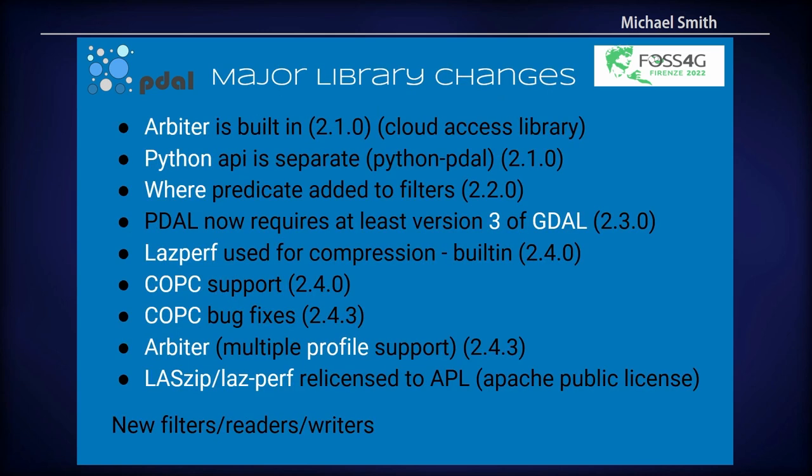A couple of major library changes over the past few years. The cloud access library, Arbiter, is now built in. So access to Google Cloud, Azure, and AWS is all built in. The Python API is a new big change — it's now a full object-oriented Python API as opposed to the much more limited Python API we had in previous releases.